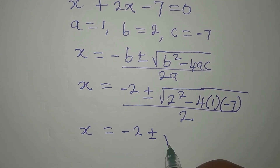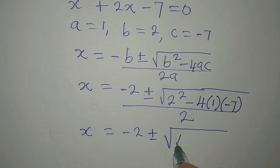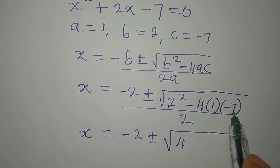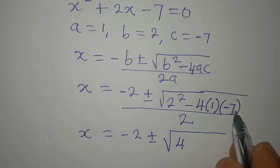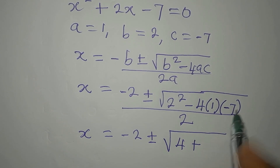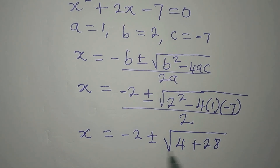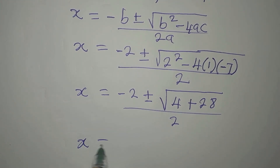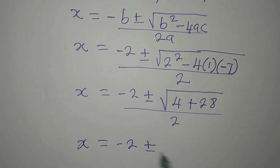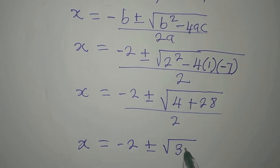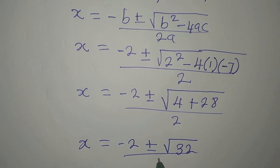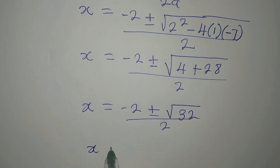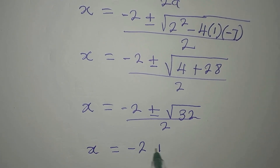Our x will now be minus 2 plus or minus the square root of 2 squared, which is 4, then 4 times 1 times negative 7 — negative times negative gives positive — so 4 times 7 is 28, giving us 4 plus 28 equals 32, and then we divide by 2.